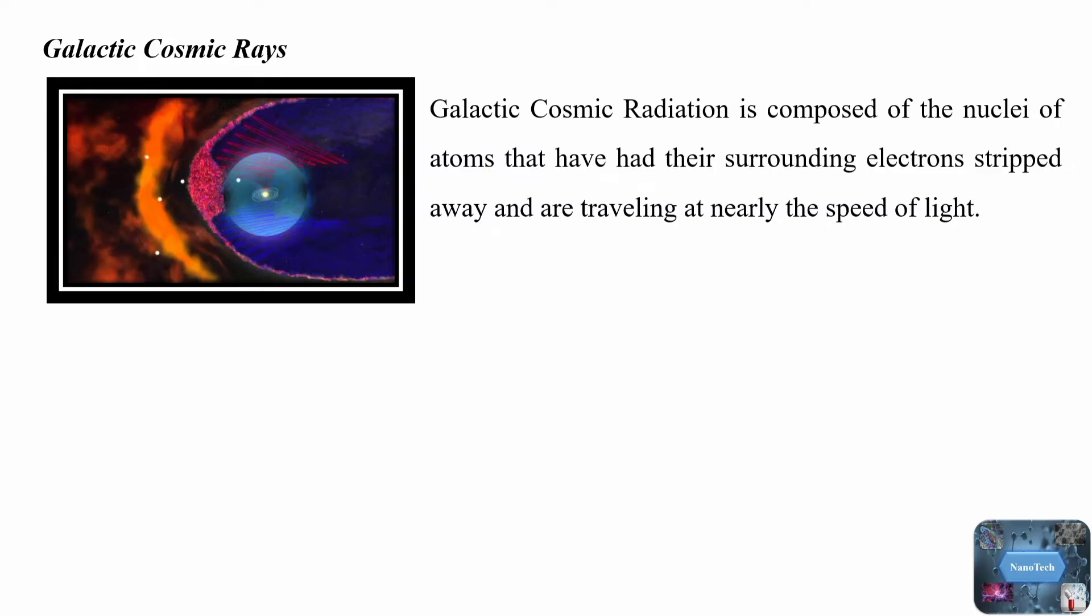These particles were probably accelerated within the last few million years by magnetic fields of supernova remnants. Galactic cosmic radiation and solar particle events can also form secondary neutron radiation after interacting with matter. These secondary neutrons have the capability to cause the highest level of damage since it is difficult to block them by magnetic and electric fields.